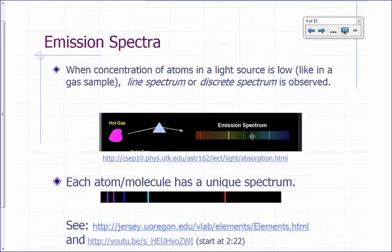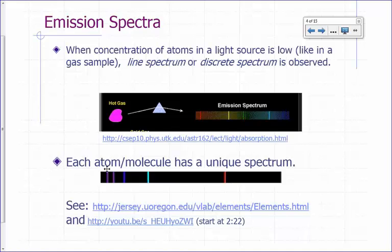So this is what you have here is what you would call the line spectrum or a discrete spectrum that's observed for this particular sample. Now, each atom and molecule, it turns out, has a unique spectrum.